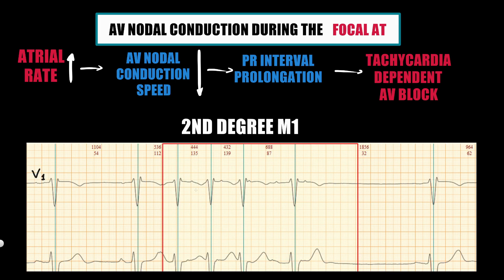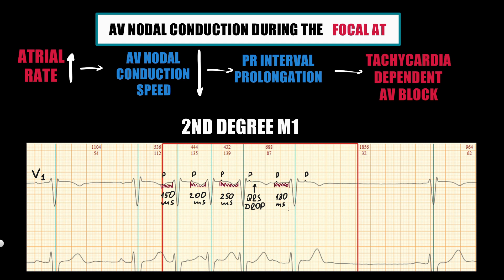It can also be second-degree AV block type Mobitz 1. In V1, the P-wave is clearly defined. The PR interval progressively increases from beat to beat until a QRS drop occurs. After the drop, the PR interval is shorter than before the drop, then progressively increases again until the next QRS drop. Rapid QRS dropping without progressive PR interval prolongation is called second-degree AV block type Mobitz 2.